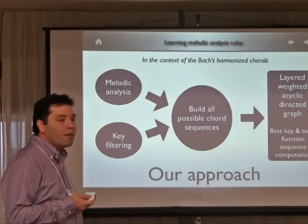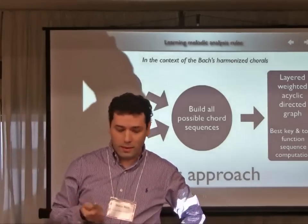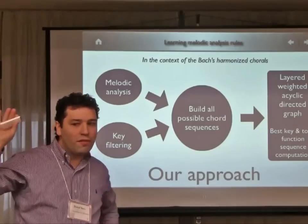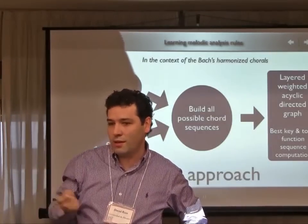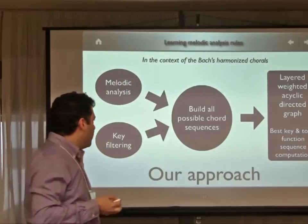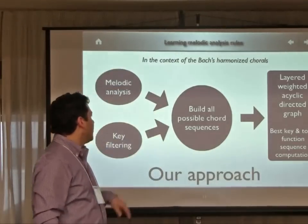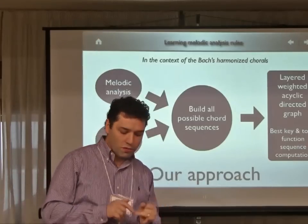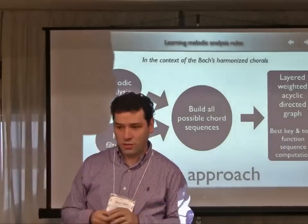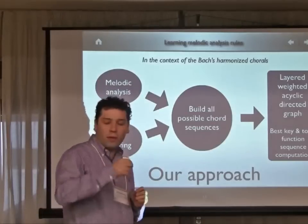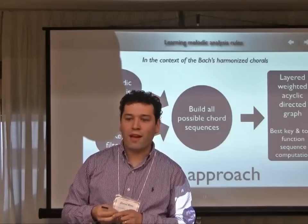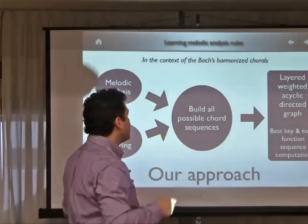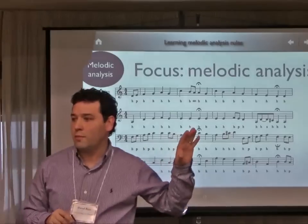In previous conferences, we presented a system that solves this problem more or less, first by computing a melodic analysis, then filtering out invalid tonalities given the accidentals of the notes. With that, we build a layered weighted acyclic graph that contains all possible combinations of tonalities, chords, tonal functions, and progressions. From that, we compute the best path in the graph to get the most probable tonal analysis. We are now focusing only on the first part: the melodic analysis.